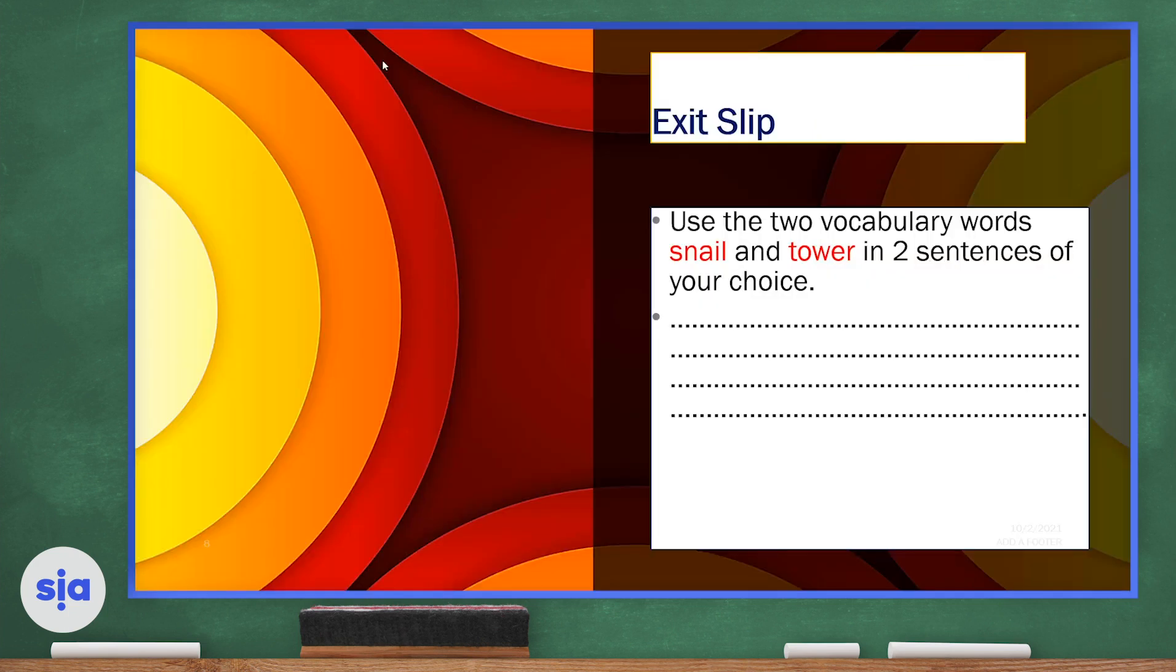Now for our exit slip of the day, I want you to use two vocabulary words—snail and tower—in two sentences of your choice. Remember to write capital letters and correct end marks. This was Ms. Sara Bathyouni. Have a wonderful day. Goodbye.